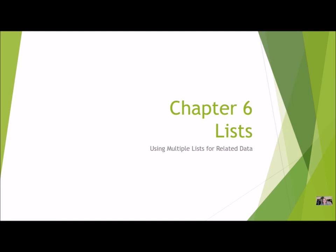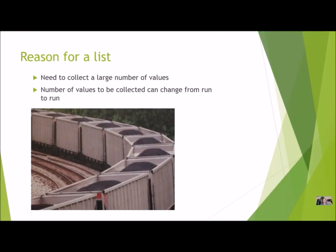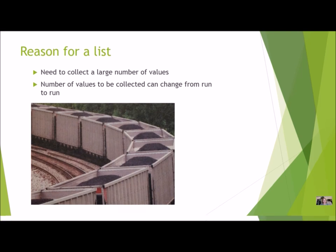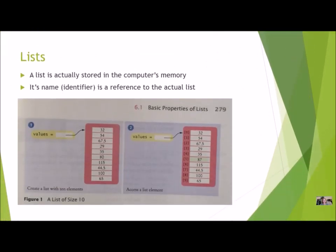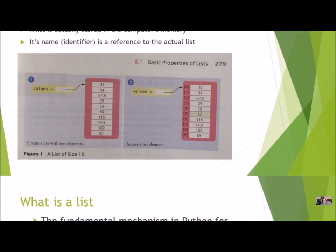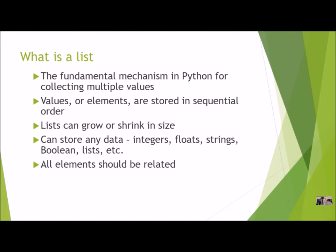For today's assignment, we're going to talk about how to handle different types of data that's all related but not the same. For a quick review, we use a list to collect a large number of values, and those values can change from run to run. A list is stored in the computer's memory, and the name or identifier is a reference to that actual list.